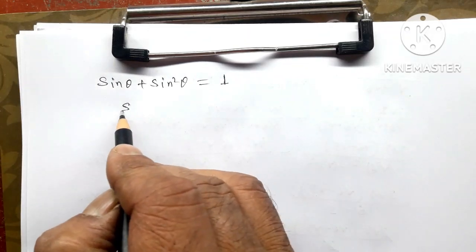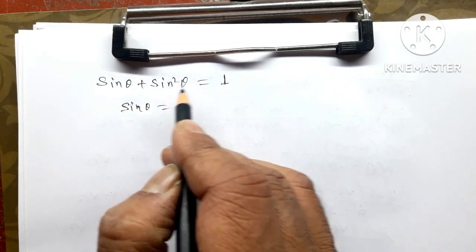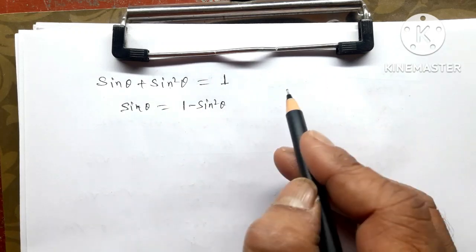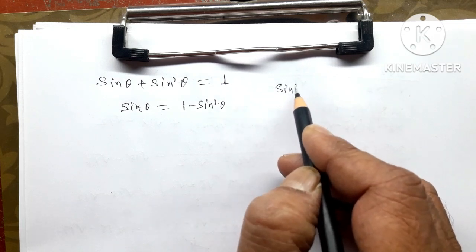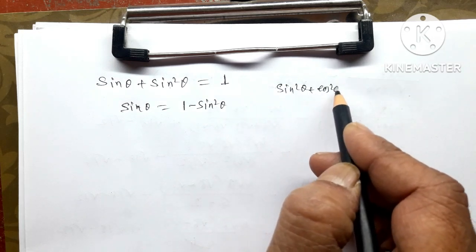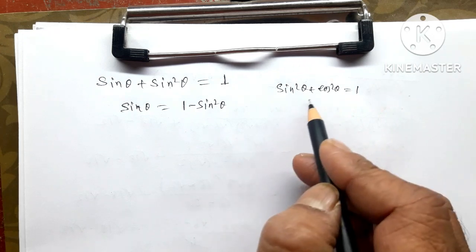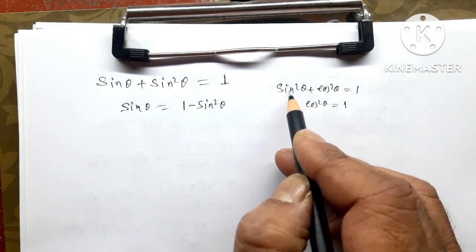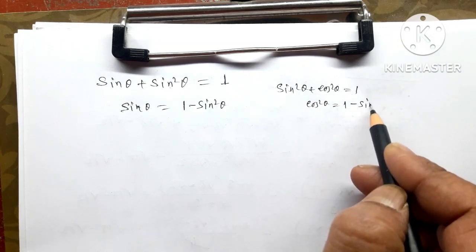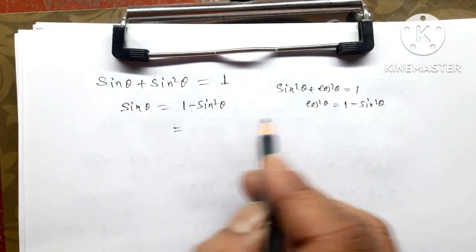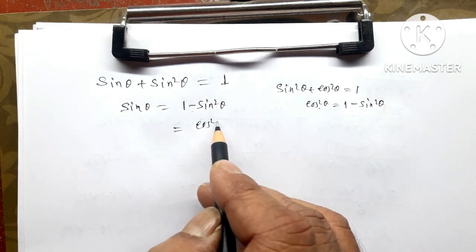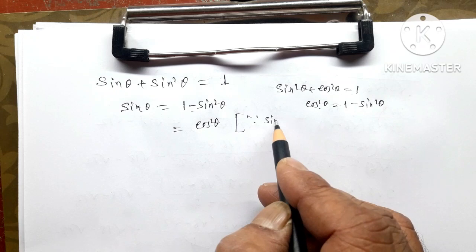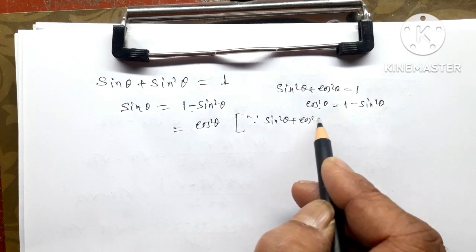So we have sin theta 1, sin square theta 1 minus sin square theta. We have three-dimensional method. x sin theta plus cos square theta 1. So we have cos square theta 1 minus sin square theta. 1 minus sin square theta 1. Bracket j equals theta 1, j sin square theta plus cos square theta 1.